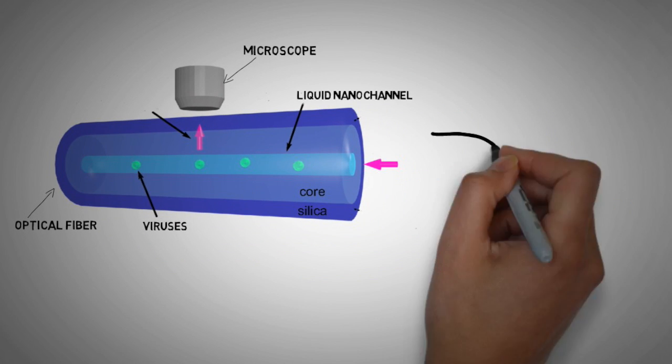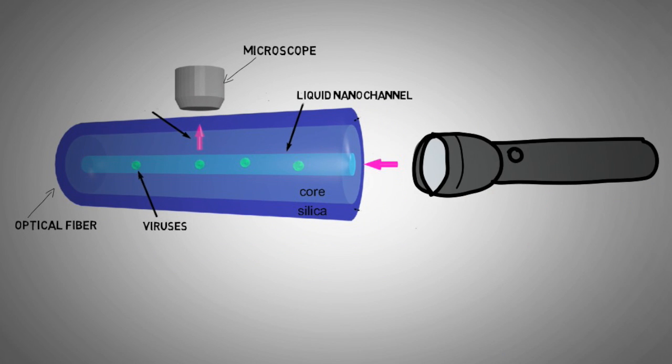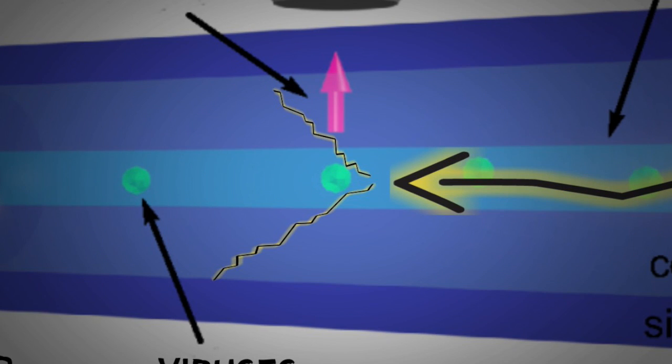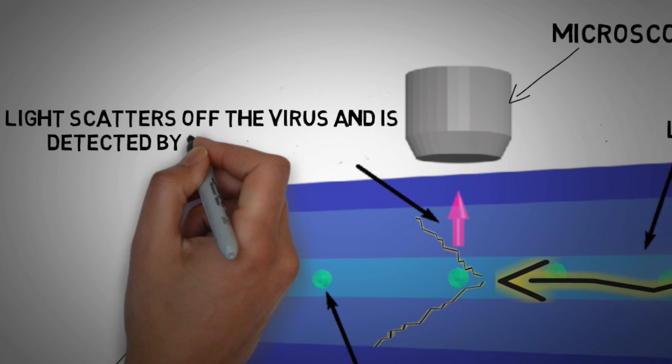Researchers put viruses into a liquid and pumped it into the channel. When light is guided through the fiber's core, it scatters off the nanoparticles, making the viruses visible to the microscope above.